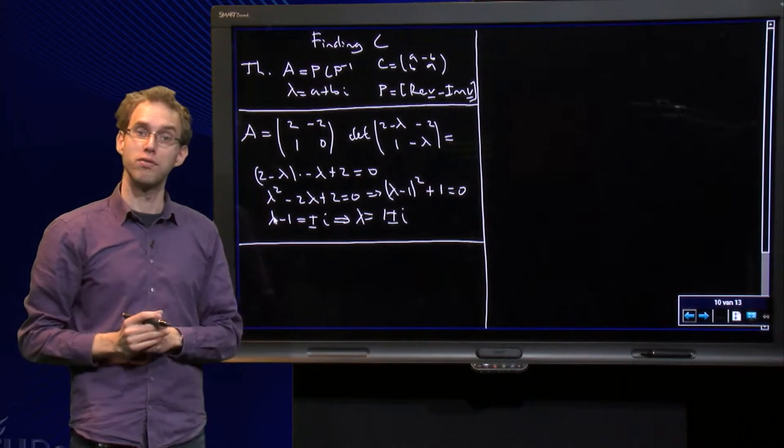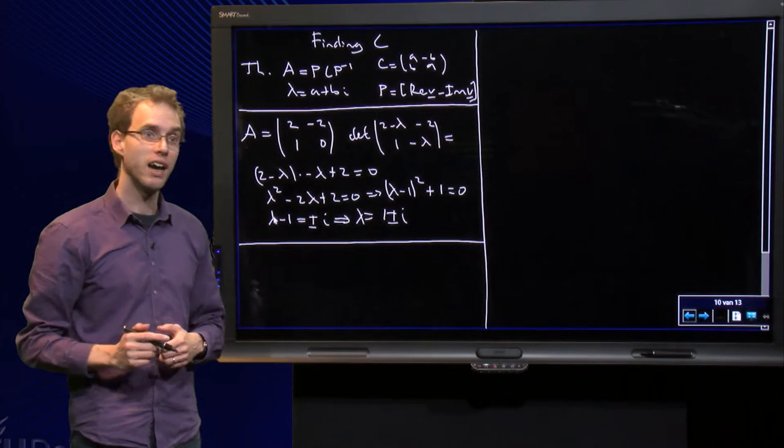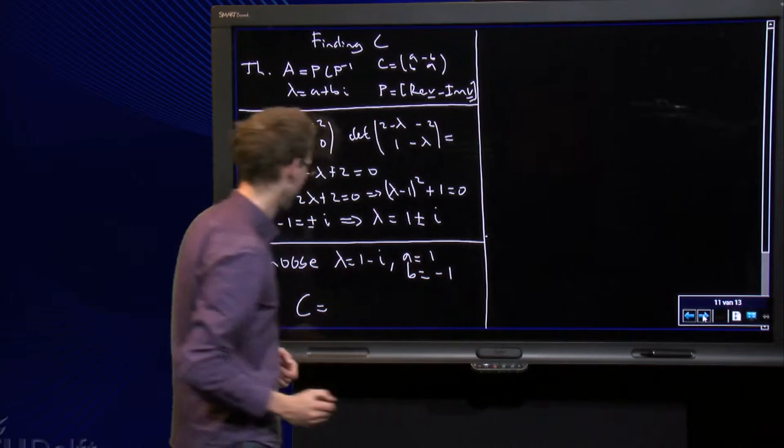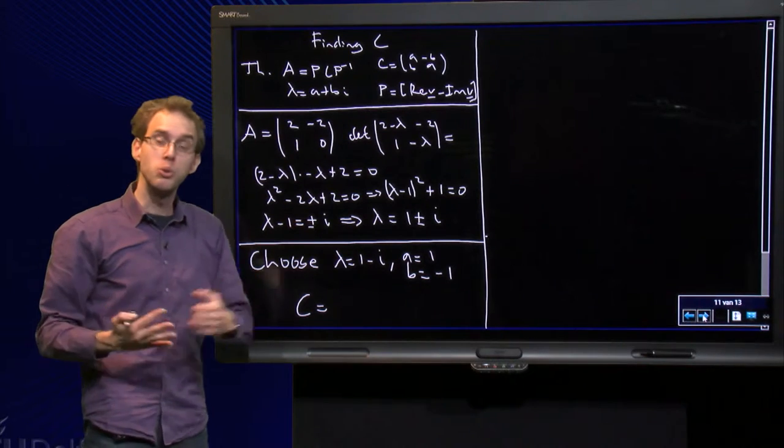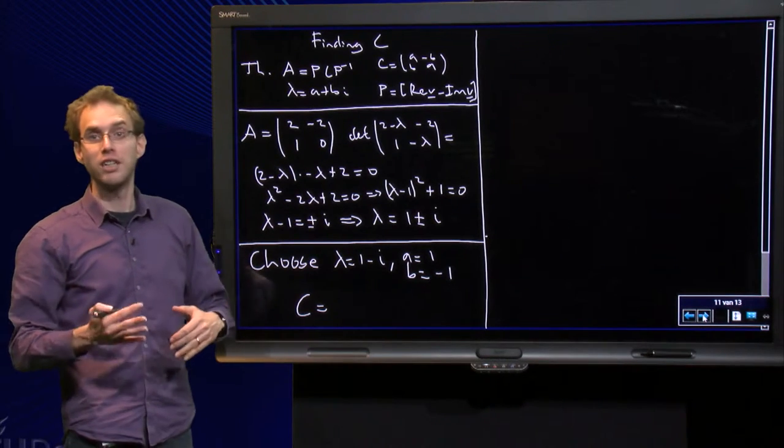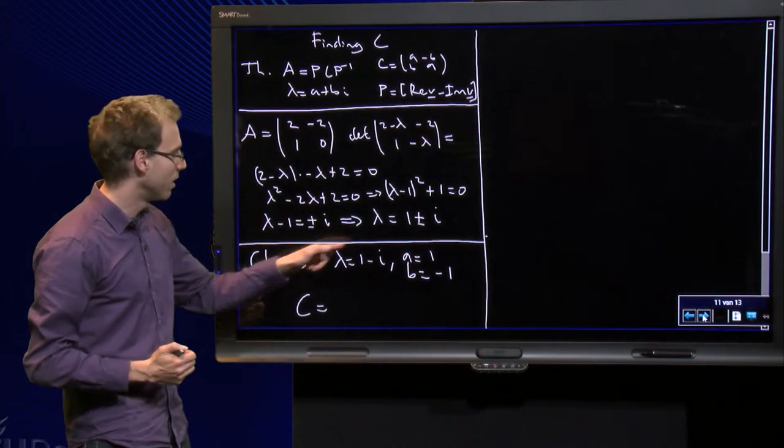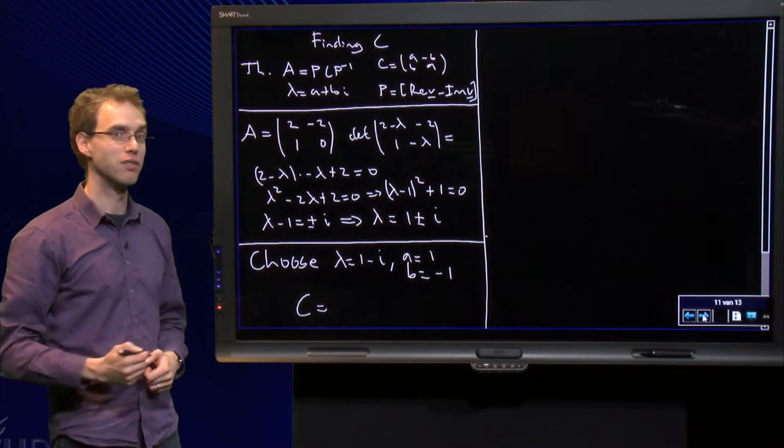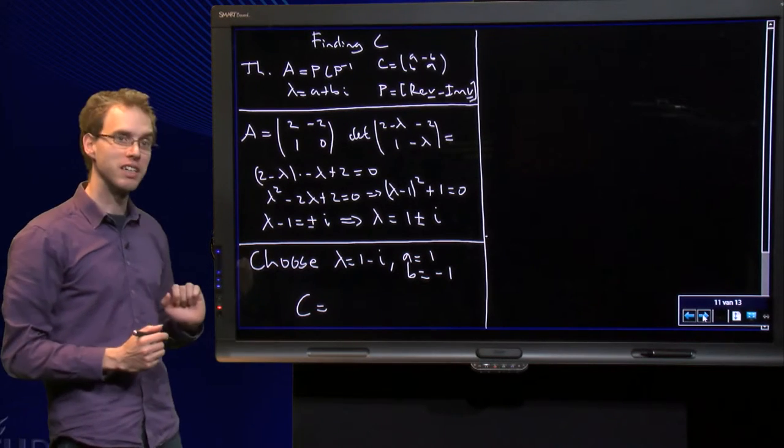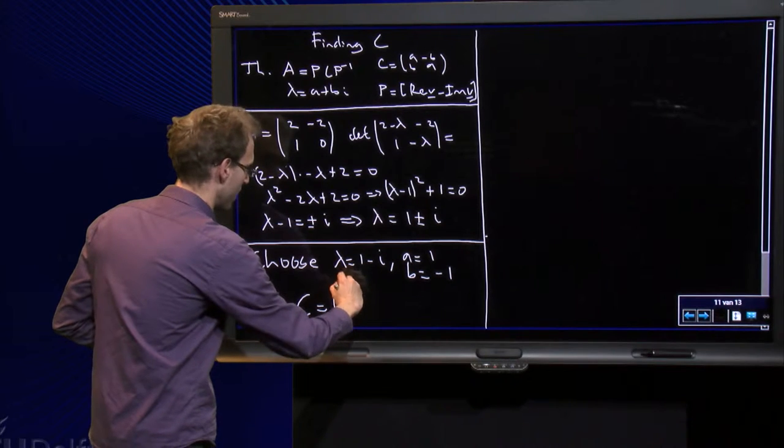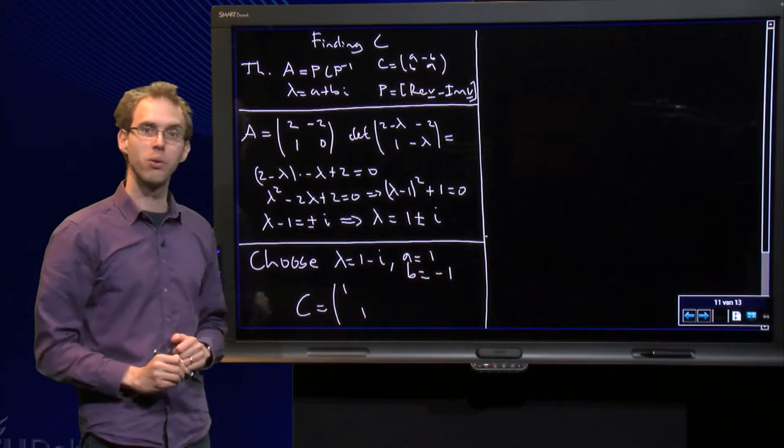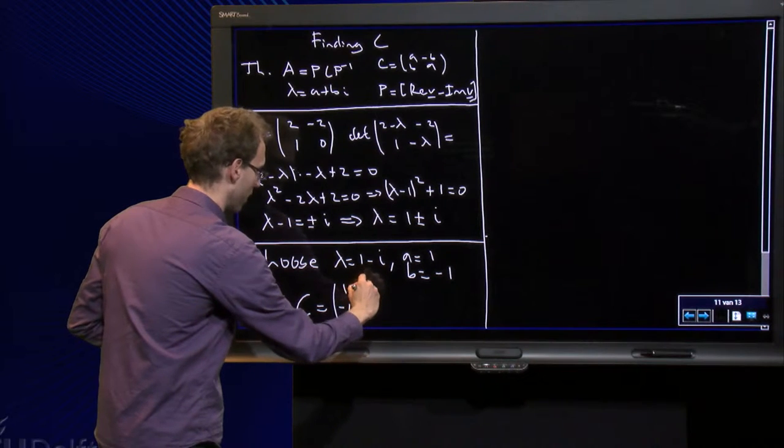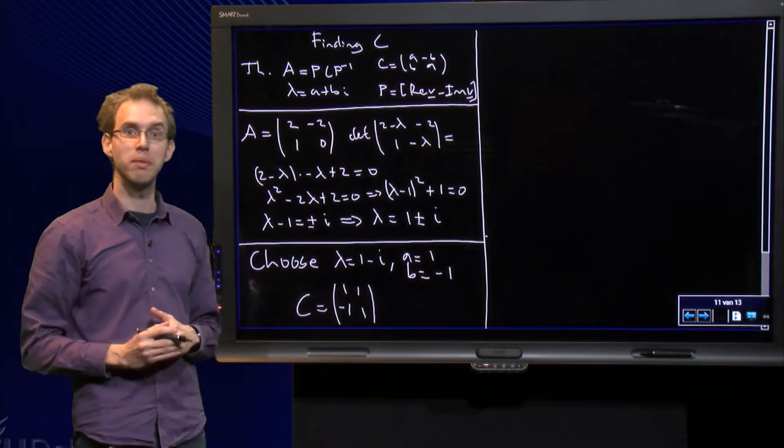So they are of the form a plus or minus bi, so now I can find a C matrix. I can choose an eigenvalue, let's say I choose λ = 1 - i, which means that we have a = 1 and b = -1. Then I find the matrix C equals a on the diagonal (1, 1), b over here and minus b over here. And then we have found our C matrix.